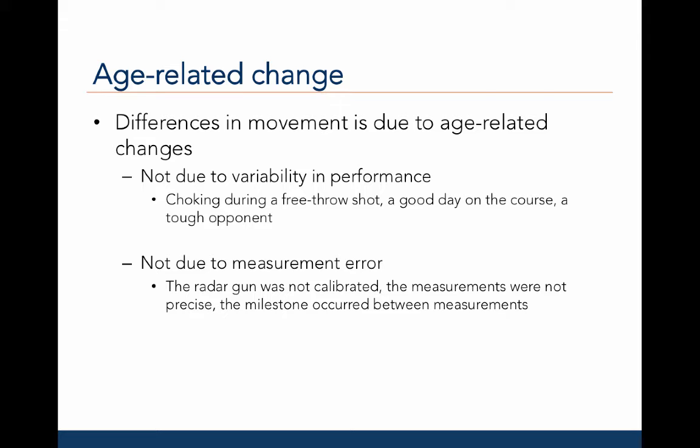For example, if a person misses a free throw shot or chokes during a game, or shoots two under par on a particular golf course, or is playing poorly against a tough opponent. We are also not concerned with movement differences due to measurement error — for example, if scores are variable from one day to the next because a radar gun was not calibrated correctly, measurements were not taken precisely the same way each time, or the actual day a skill or milestone was acquired was missed because it happened between testing sessions.